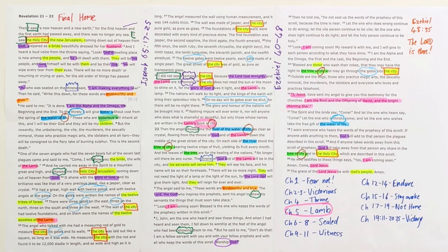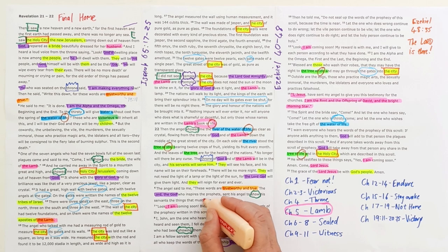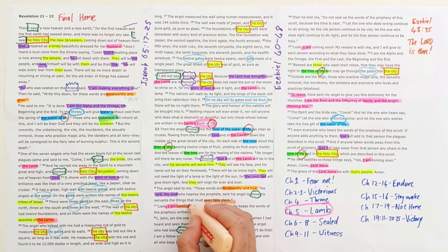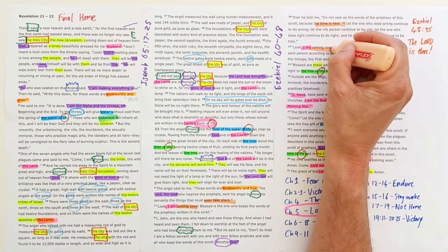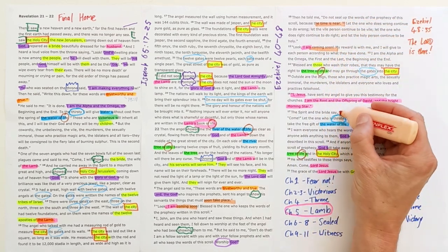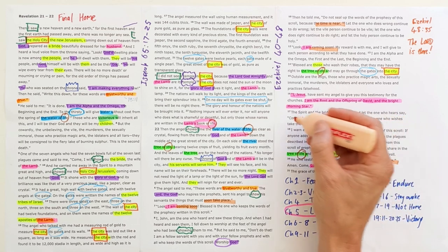And the Lamb are its temple. In John chapter 2, Jesus said destroy this temple and I will raise it again in three days, talking about his own body. Here we see that fulfillment, Jesus is the temple. And then something we see repeated in the last few verses is this idea of what must soon take place. Jesus is coming soon, the time is near, I'm coming soon, and this call for him to come, come, come.